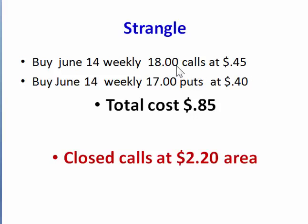In this case, you might buy the June 14th weeklies. You don't have to go too far out as far as expiration, because if the price is going to move, it's going to move in the next day or so based upon the announcement of earnings that night. So you could buy the 18 calls for 45 cents and the 17 puts for 40 cents, giving you a total cost in your trade of 85 cents. That means the price would have to move greater than 85 cents above or below this level to get your cost back.